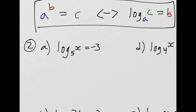So the 5 becomes the base of my exponent. The exponent would be negative 3, and x would be on the other side. So this becomes quite simple. It's just 5 to the negative 3, that is the value of x. So x is 1 over 125.